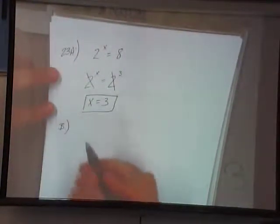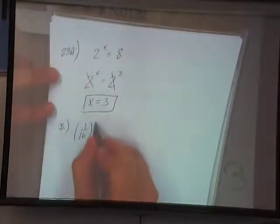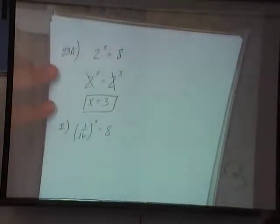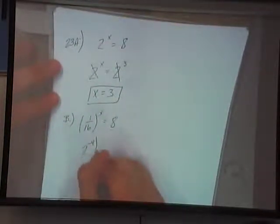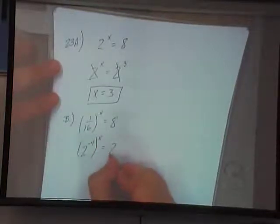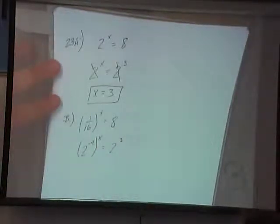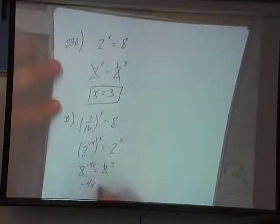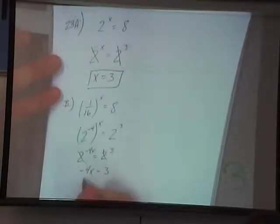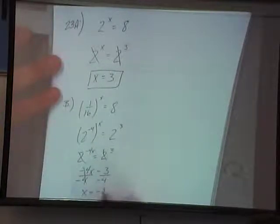Alright, B. 1 over 16 to the x power equals 8. And what can I turn both these bases into? 2. Very good. 2 to the negative fourth power is 1 over 16, and 2 to the third power is 8. So it will be 2 to the negative 4x equals 2 to the third. Drop the bases. So x is equal to negative 3 fourths.